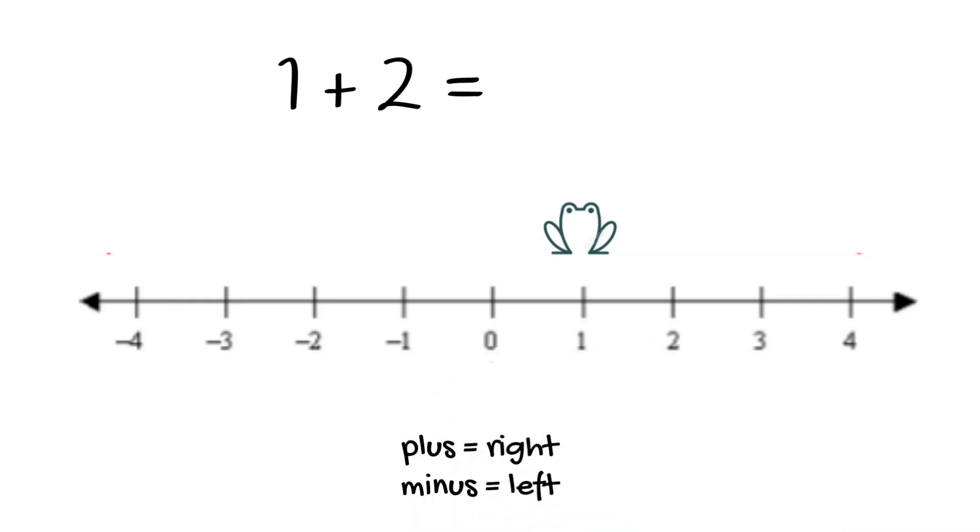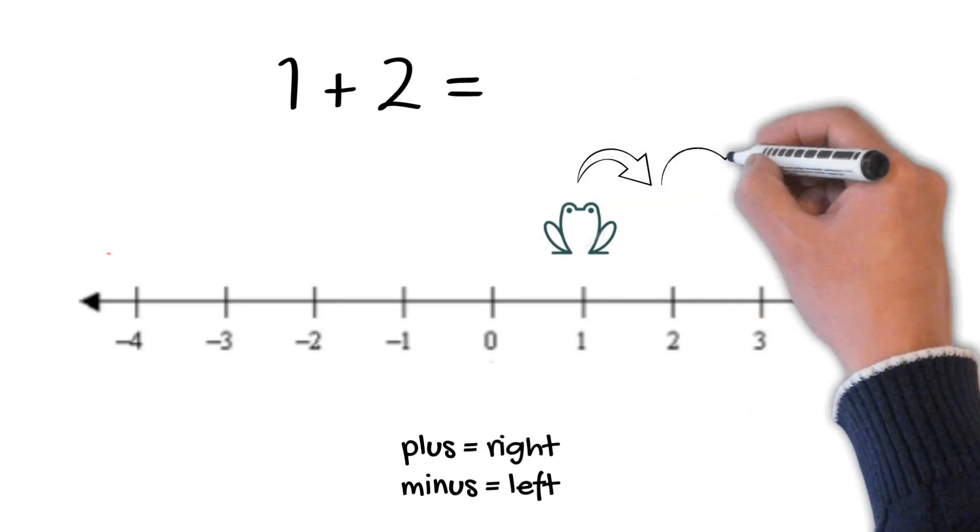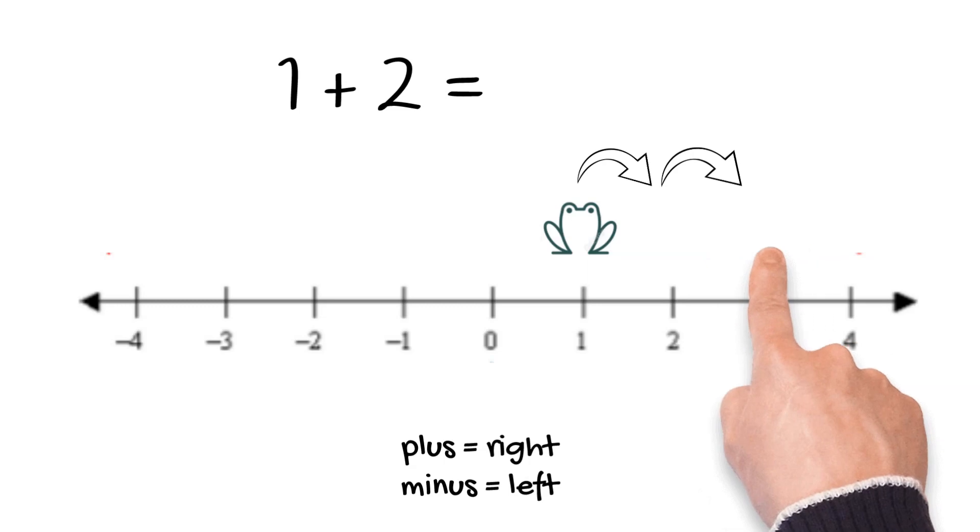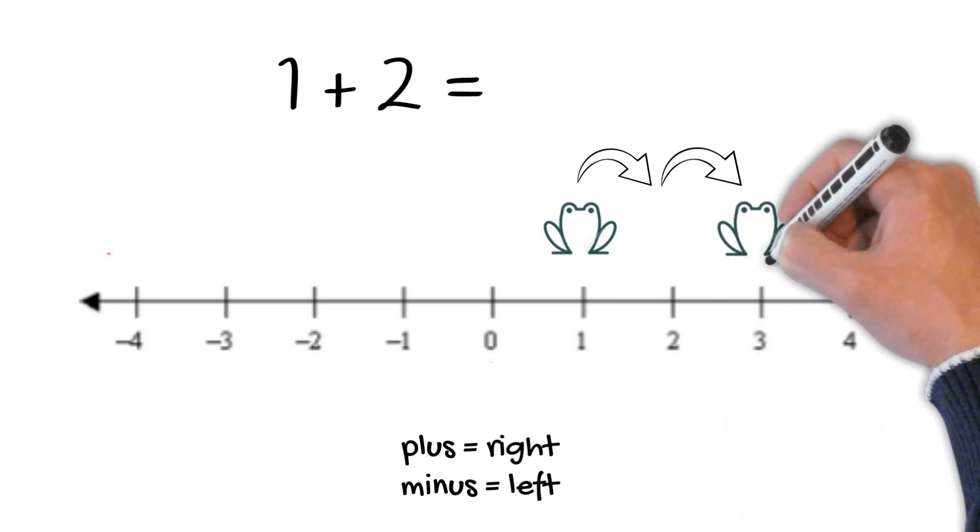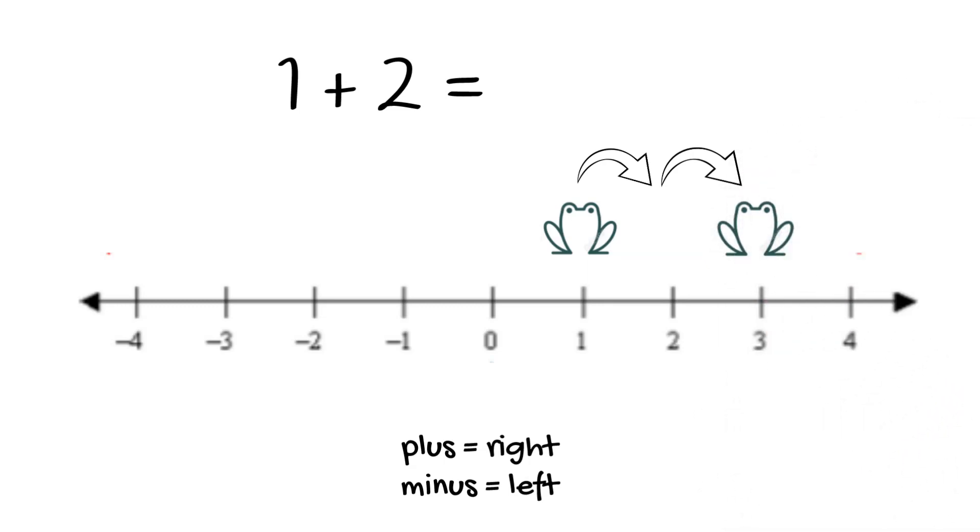The operation, plus or minus, tells you which direction the frog jumps. Since we are adding, our little frog will jump to the right. The second number tells us how far to jump. Since our second number is 2, our little frog will jump two spaces to the right. Since he landed at 3, that's our answer: 1 + 2 = 3.